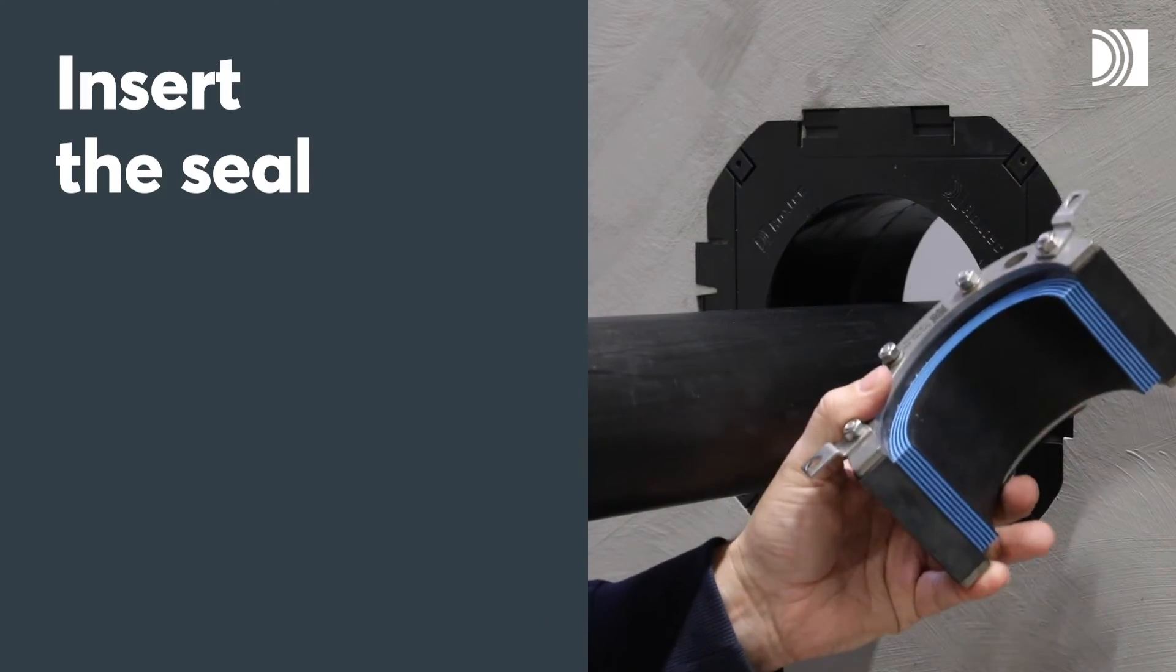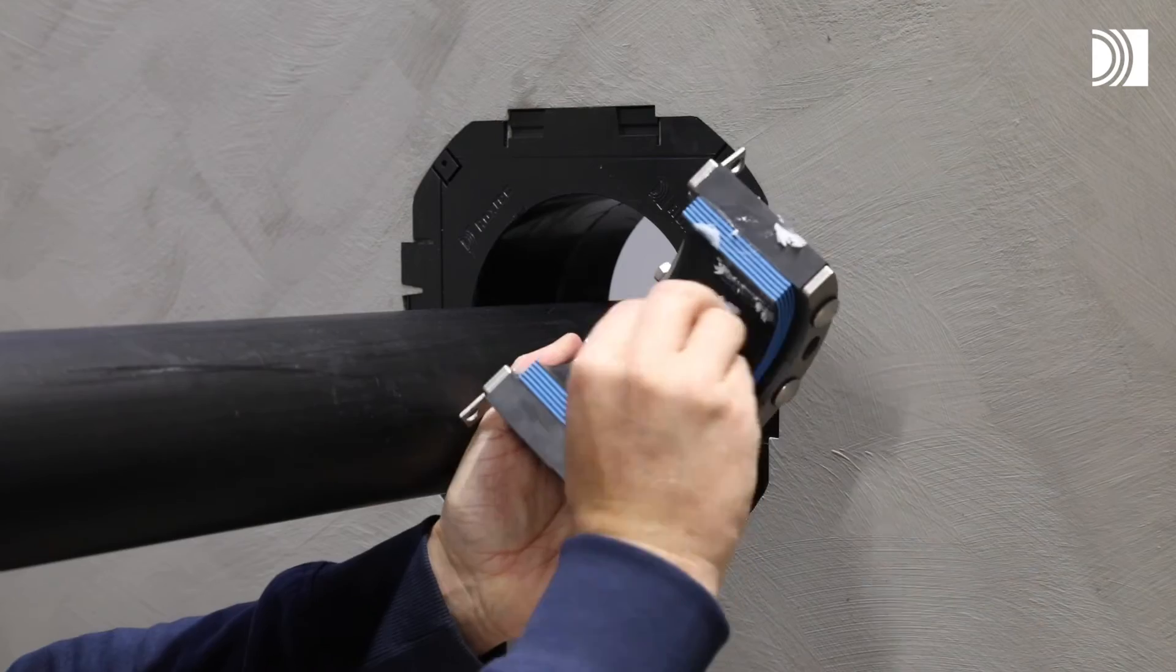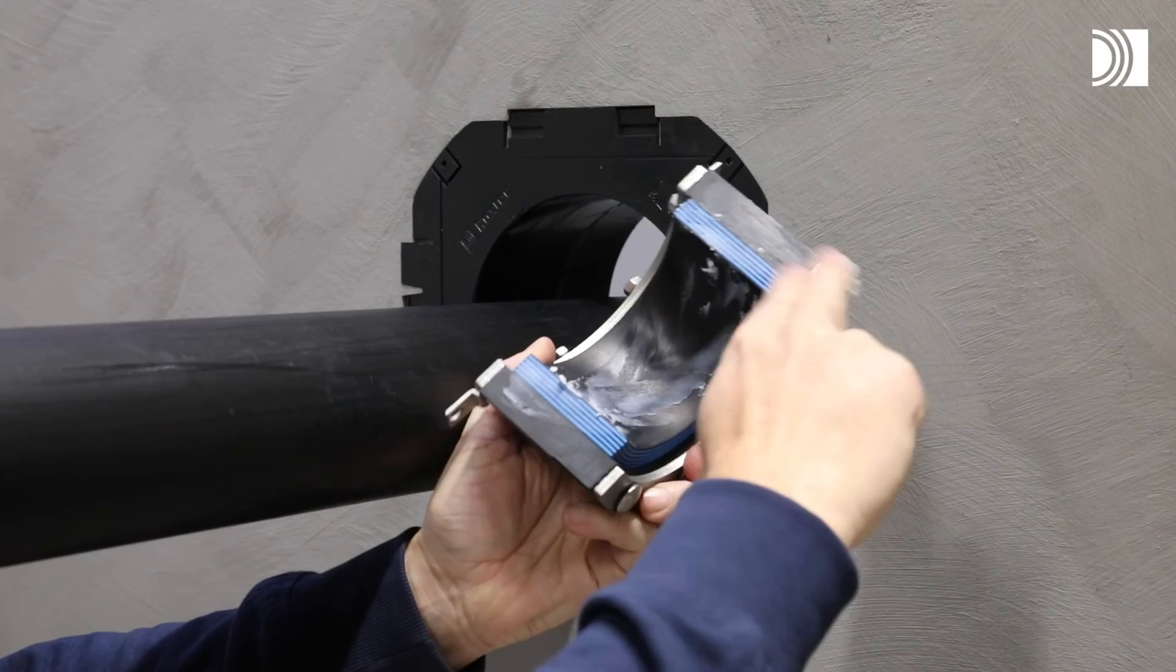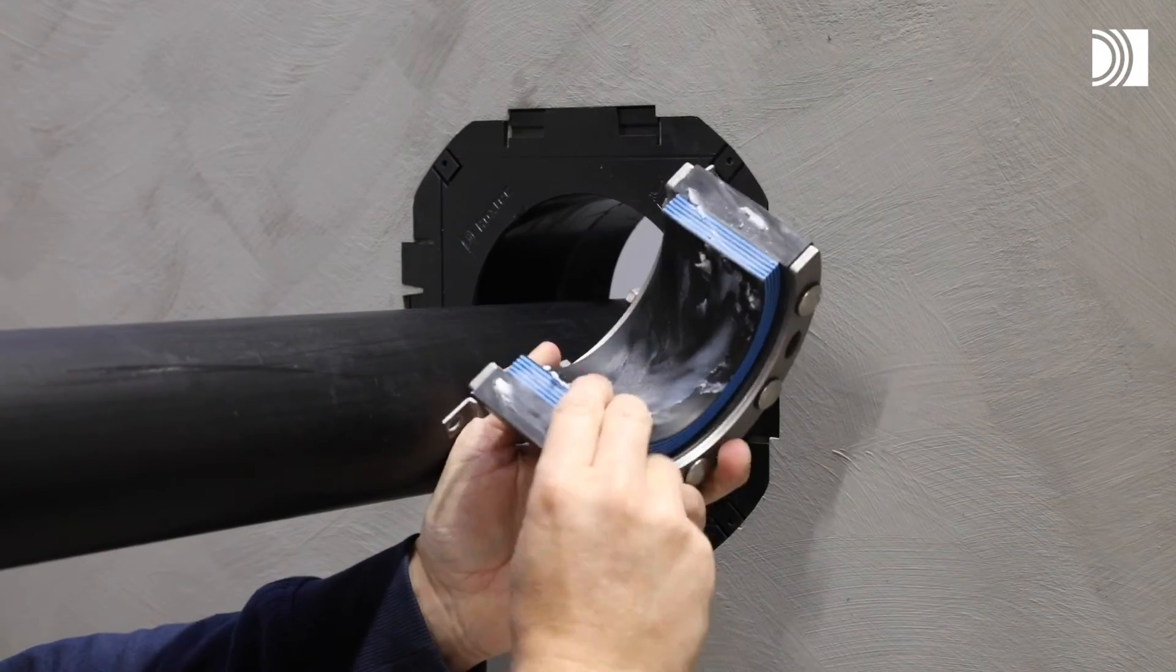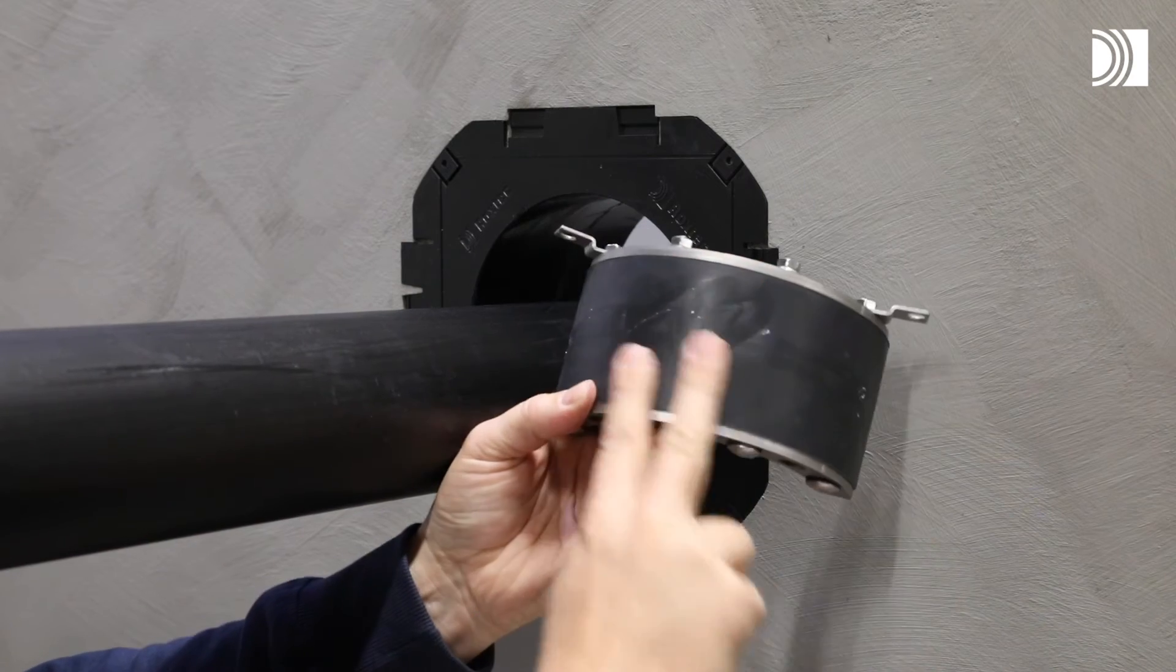Insert the seal. Lubricate the inside sealing surfaces with Roxtec lubricant. Lubricate the outer sealing surfaces sparsely if needed.